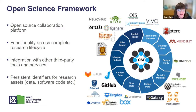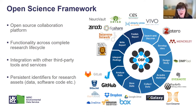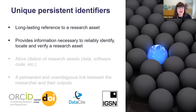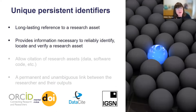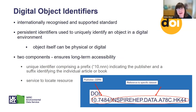The Open Science Framework makes comprehensive use of persistent identifiers. Unique persistent identifiers are important because they provide a long-lasting reference to research assets. They provide the information necessary to reliably identify, locate, and verify research assets. For example, let's look at the Digital Object Identifier.